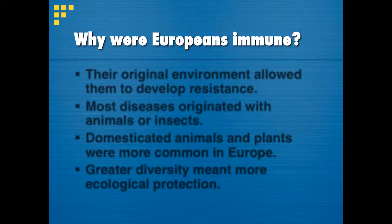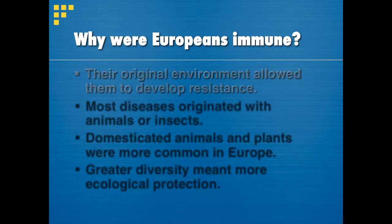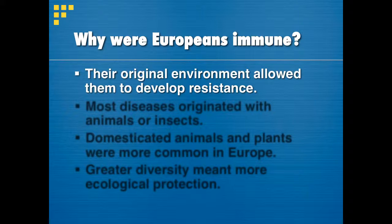So why were the Europeans immune to these diseases? If it was killing the natives, why didn't it kill the Europeans? The European environment allowed them to develop resistance to these diseases over thousands of years. The weaker Europeans had died long ago, and so those Europeans that remained had resistance built into their genetics. They were essentially stronger in terms of their immune system.